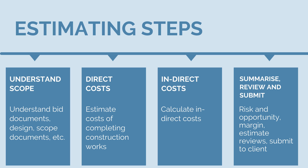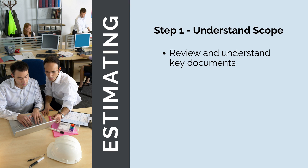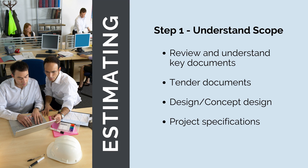We'll need to work out our risk and opportunity, margin and corporate overheads and add these to our costs to submit to the client. We'll also need to get the estimate reviewed internally by our management staff. Before we get started on any pricing, the first step is to understand what we're being asked to build. We need to review and understand all the documents that define the project scope, including the design or concept design, project specifications and any other relevant information provided in the tender documents.